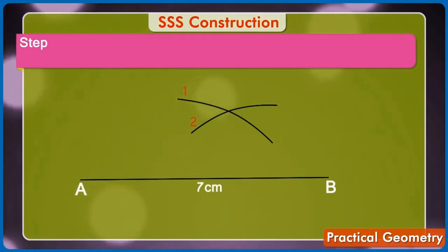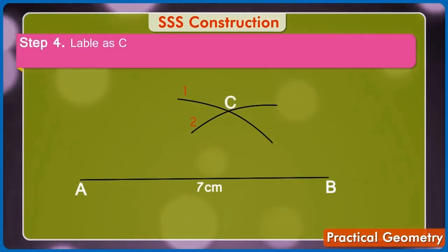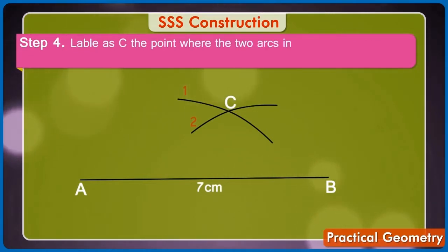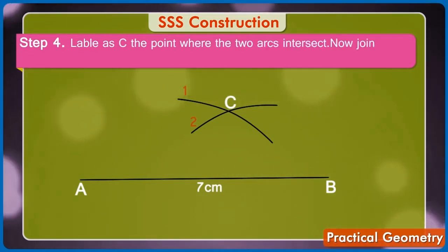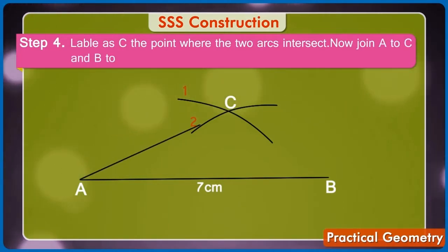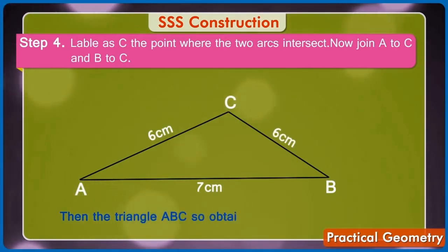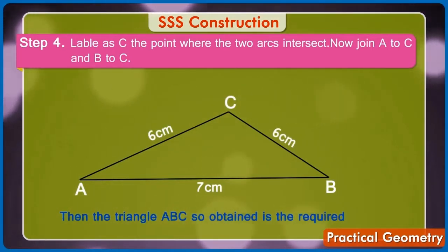Step 4: Label as C the point where the two arcs intersect. Now, join A to C and B to C. Step 5: Then the triangle ABC obtained is the required triangle.